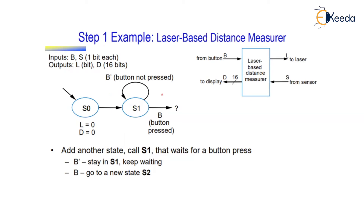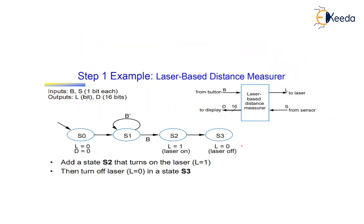The next state is S1, where we wait for the button to be pressed. If the button b is not pressed, we stay in S1. If the button is pressed, we move to state S2. In S2, the laser is turned on — l becomes equal to 1.